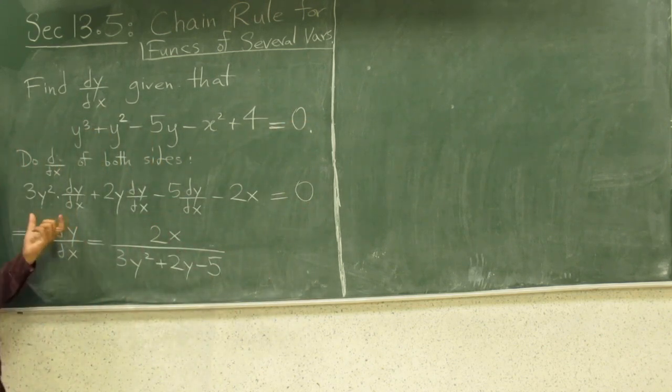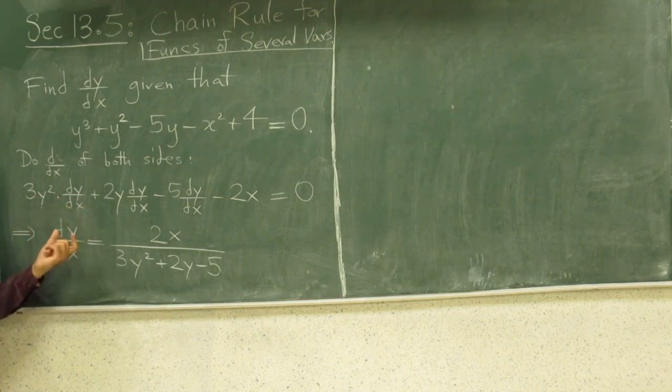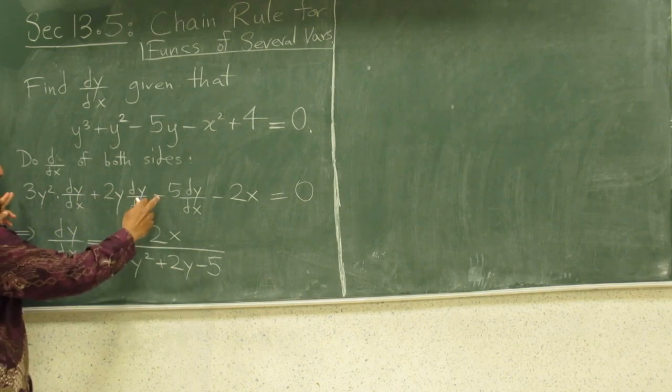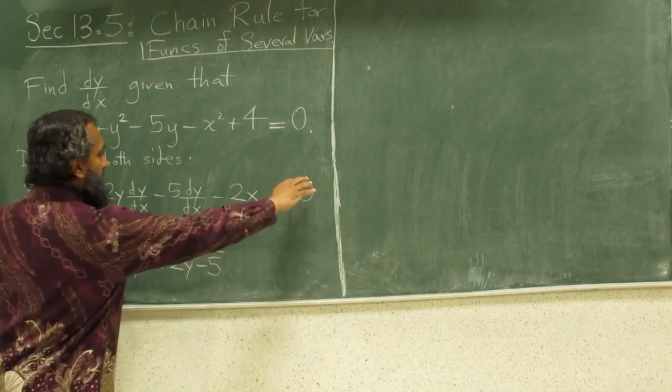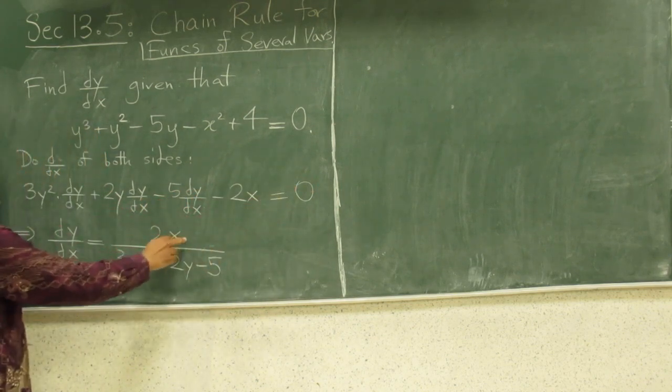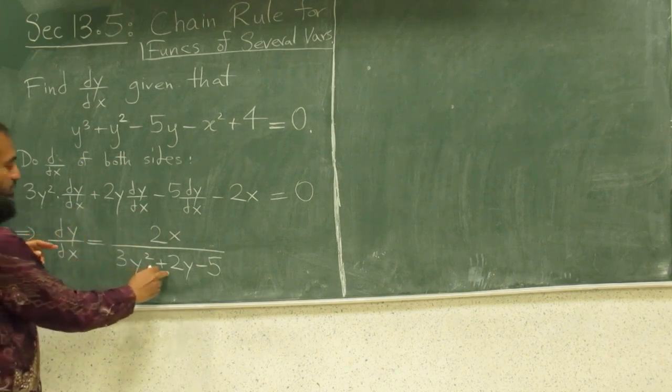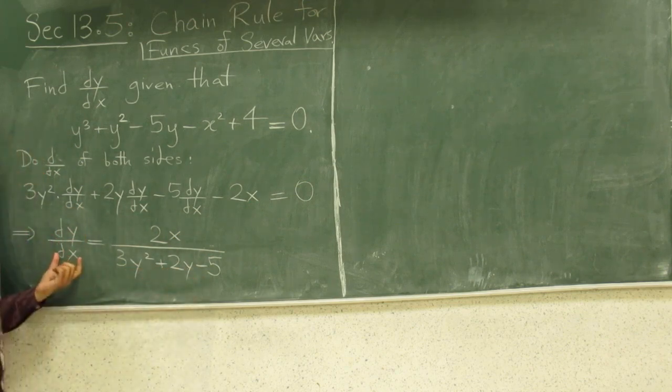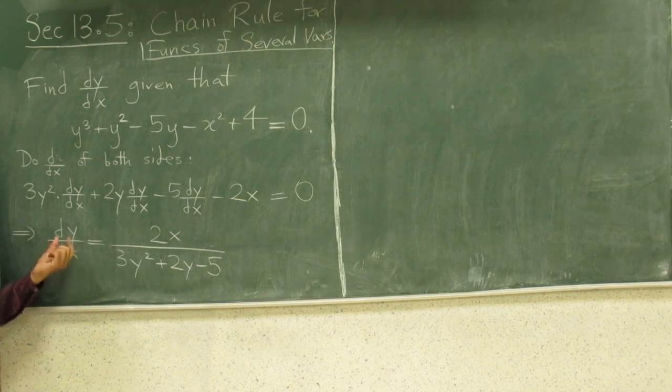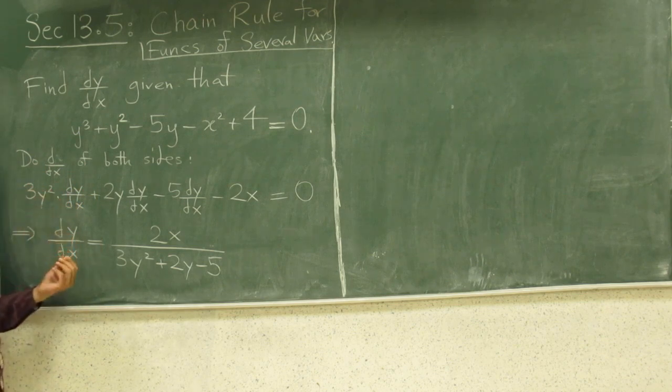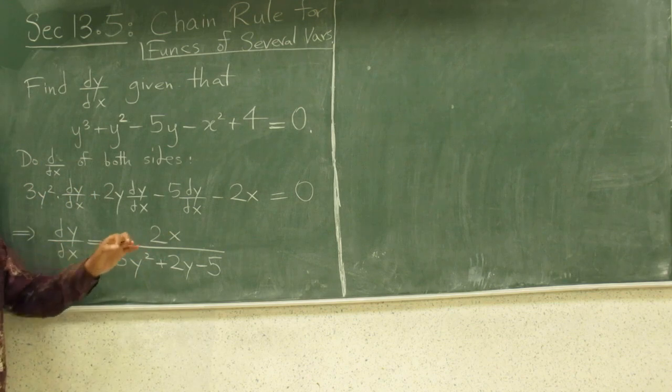Okay, then what you do here, you extract the dy dx, factor out the dy dx, you'll get 3y squared plus 2y minus 5, move the minus 2x to the other side, you get 2x to the other side, divide by 3y squared plus 2y minus 5, and this is how you found the derivative of y with respect to x. And, you know, if this was some curve, you can find slope at a given point, by this formula, you can plug the xy values at that point and get the slope.